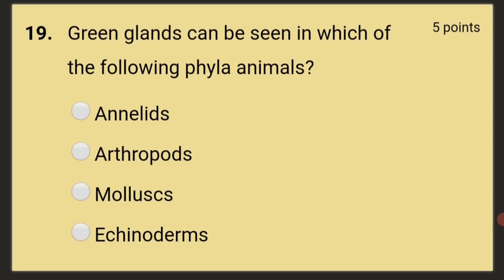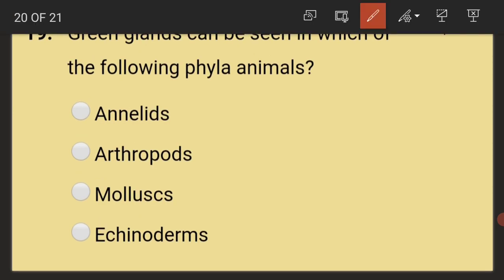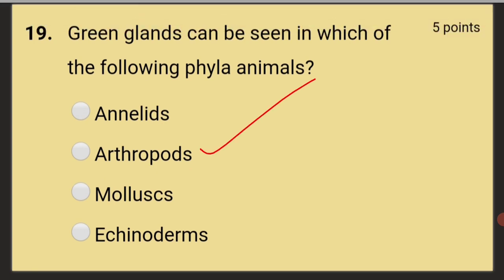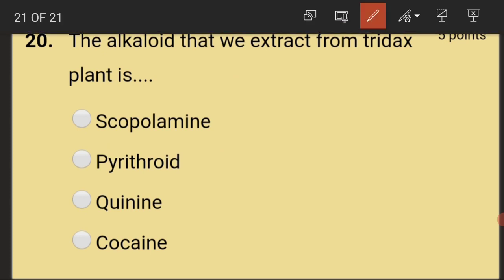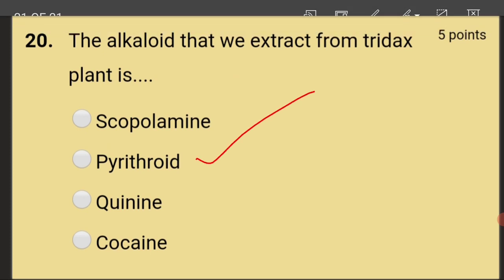Green glands can be seen in which phyla? The answer is arthropods. Green glands are the excretory organs in crustaceans, and Crustacea is a class of Arthropoda. The alkaloid extracted from the Tridax plant is pyrethroid.